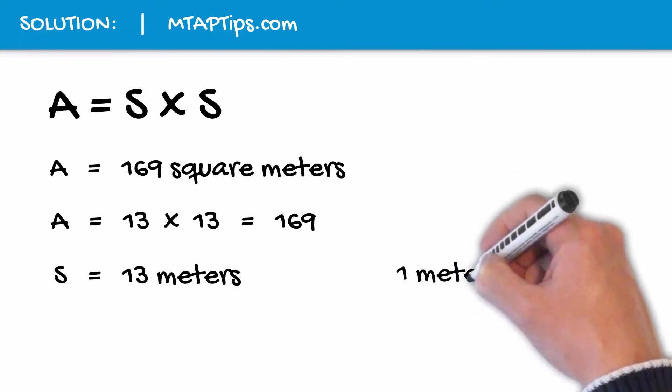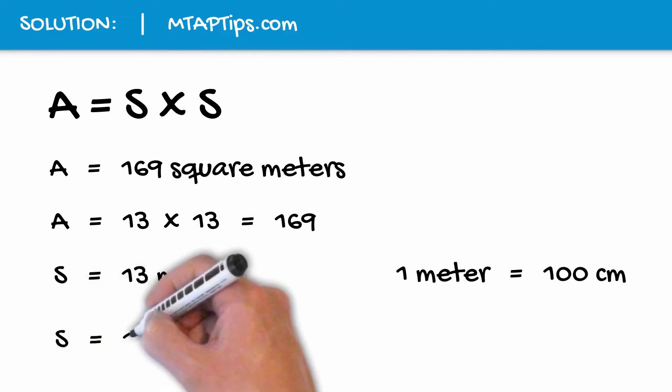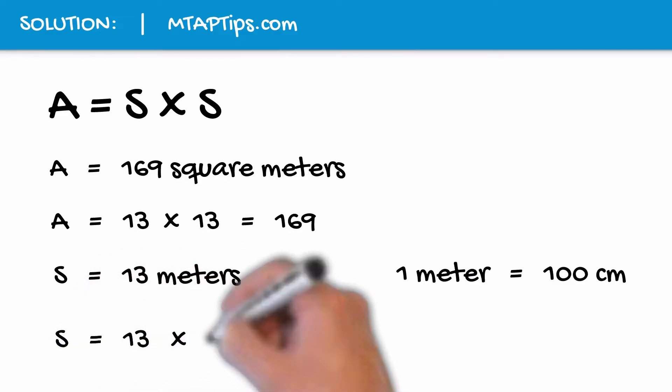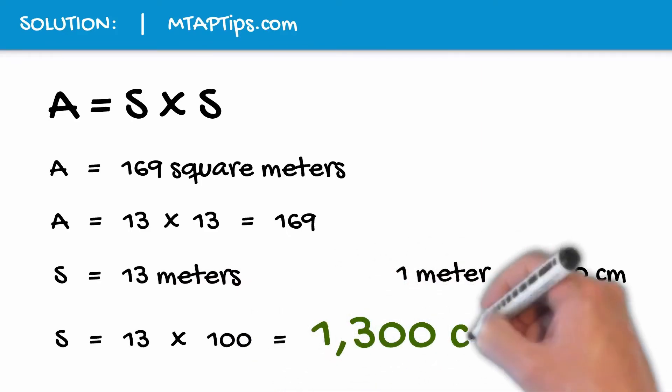Now if one meter is equal to 100 centimeters, then we just have to multiply 13 times 100 and we'll have 1,300. So one side of a square is equal to 1,300 centimeters.